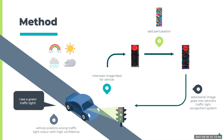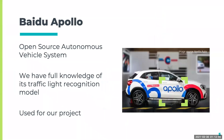We are going to test this under bright, rainy, and foggy conditions. The autonomous vehicle system we are using is Baidu Apollo. We are using it because it is open source, and hence we have full knowledge of this traffic light recognition model.